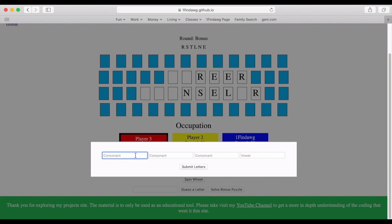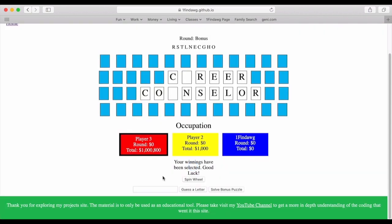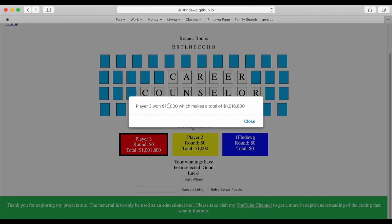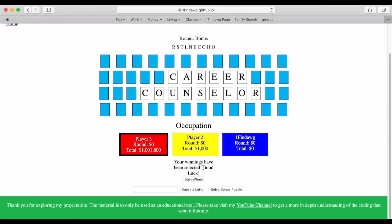So I'm going to go with C-N. I think I know what it is. I think it's going to be career counselor, which means there's only one other vowel. So we're going to submit those letters. It's going to automatically fill it in. I think I'm right. Let's see if I can make sure I spell this correctly and we'll solve it. I win. It was $15,000 so added to my total here I win with $1,016,800. And that is how you can play this game and it will reset after some time.